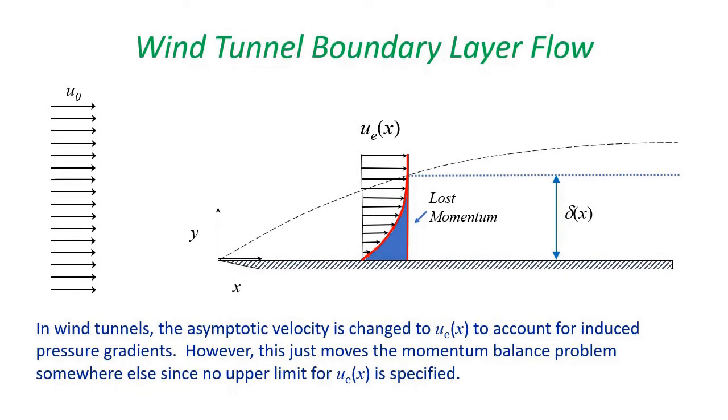One possibility is to turn to what is often done in wind tunnel data. In wind tunnels, to account for intentionally induced pressure gradients, what is done is to change the asymptotic velocity to u sub e instead of u sub zero. U sub e is allowed to change with x due to changing pressure gradients along the wall. However, this just moves the momentum balance problem somewhere else. Since there is no upper y limit to u sub e, we replace the lost momentum with infinite momentum.